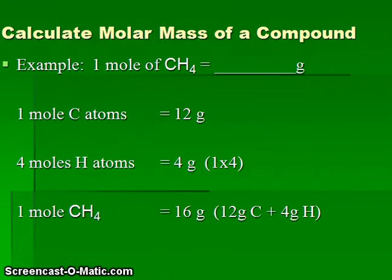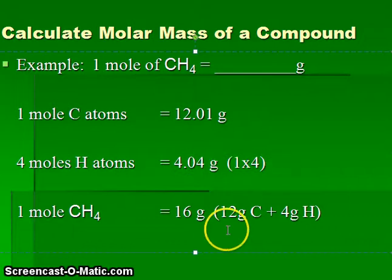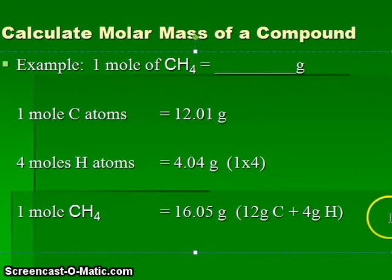So let's calculate the molar mass of a compound. Our example will be to calculate the mass of one mole of methane, CH4. To determine the molar mass of this compound, we would figure out that there is one mole of carbon atoms. This would be 12 grams. And the four moles of hydrogen atoms would have a mass of 4.04 grams. This would give a total mass of 16.05 grams for one mole of methane.